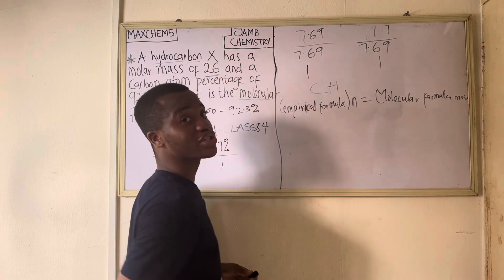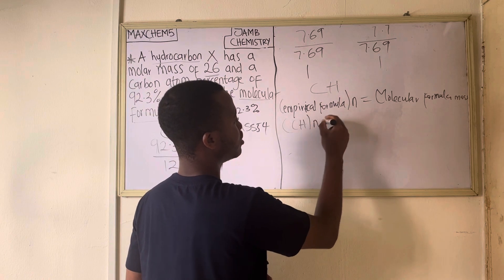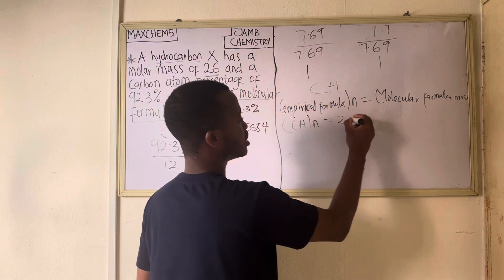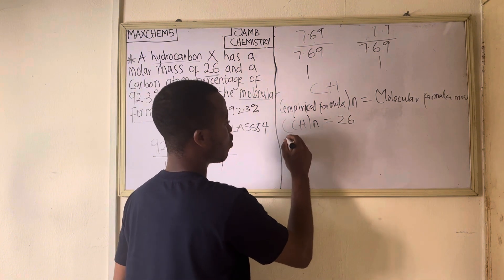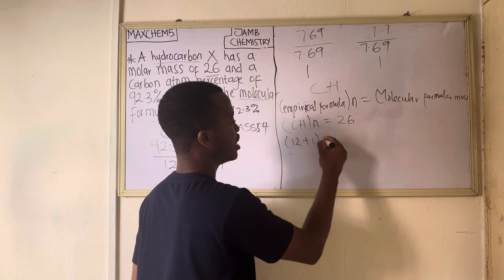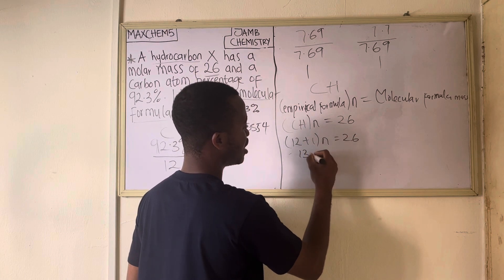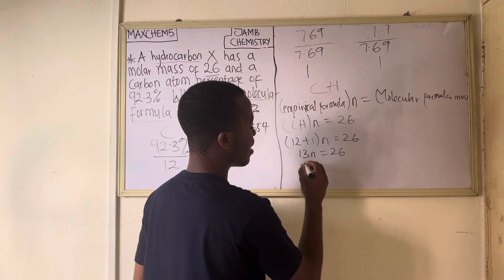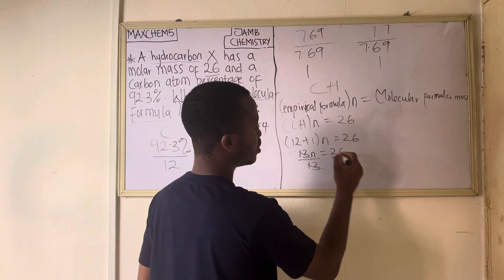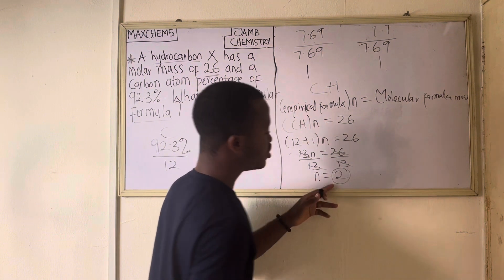So we set up the equation: (CH)ₙ = 26. We calculate the empirical formula mass: the atomic mass of carbon is 12, plus the atomic mass of hydrogen which is 1, giving us 13. So 13n = 26. Dividing both sides by 13, we get n = 2.